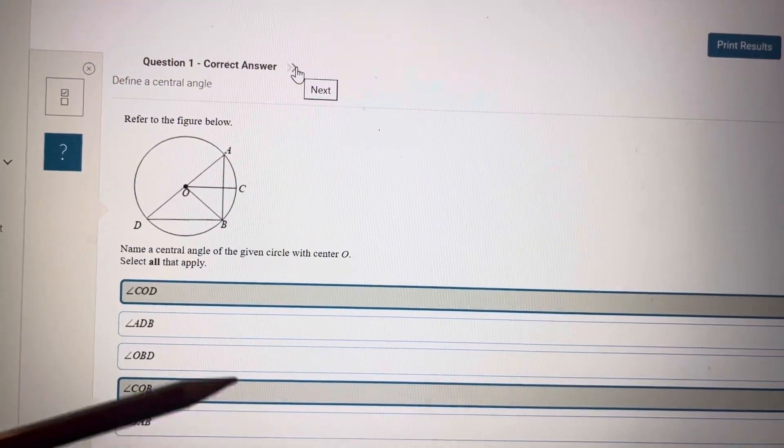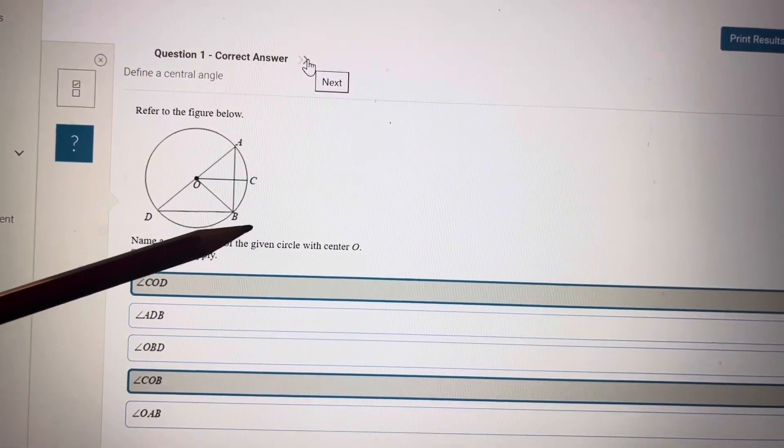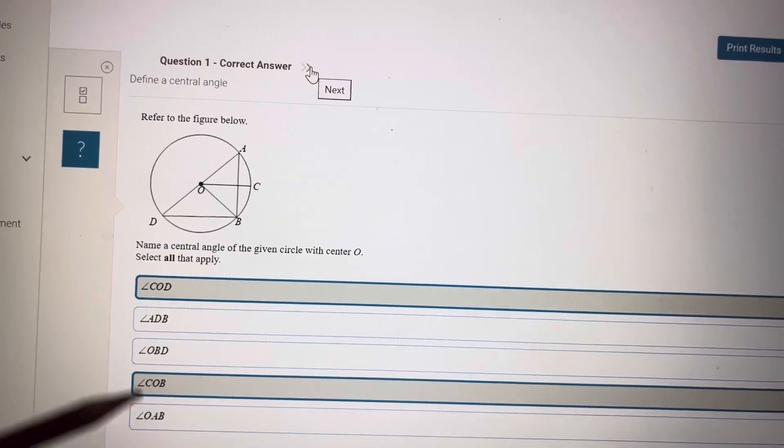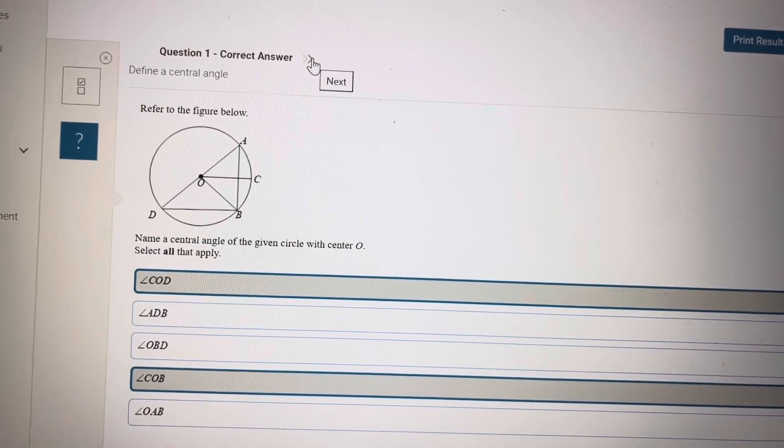COB is a central angle. Of course, AOC, COD, BOD, all are central angles. So D, B, and A are not on the center. So these three are not central angles.